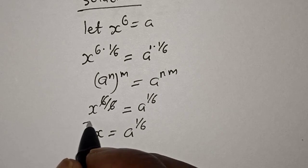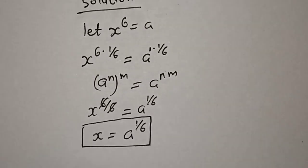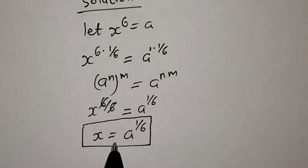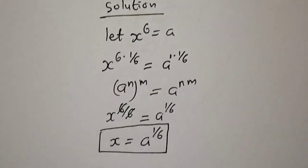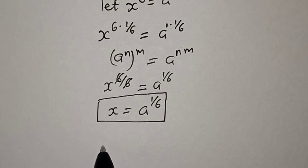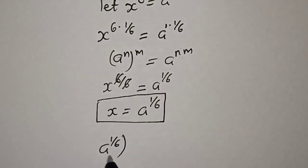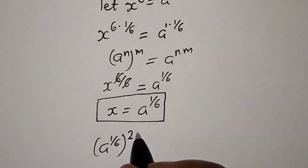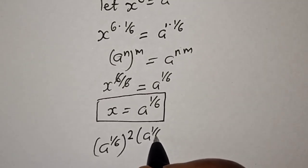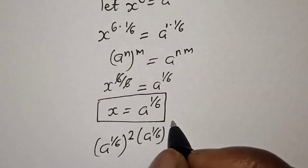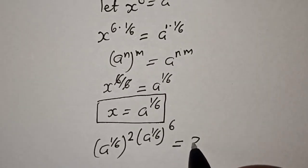So let's substitute this back into the original equation. That is, we have a raised to power 1 over 6, raised to power 2, multiplied by a raised to power 1 over 6, raised to power 6, is equal to 3.